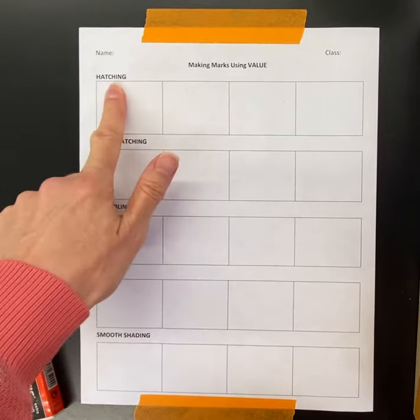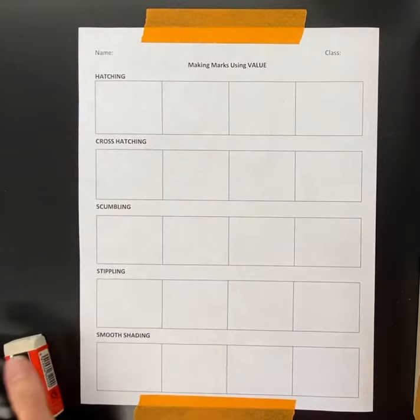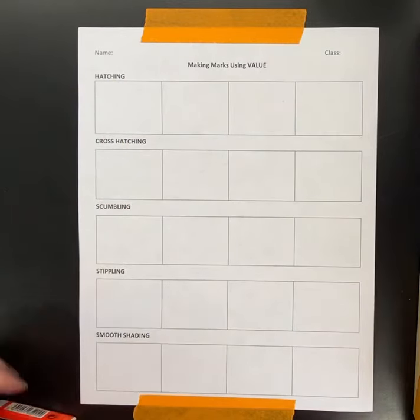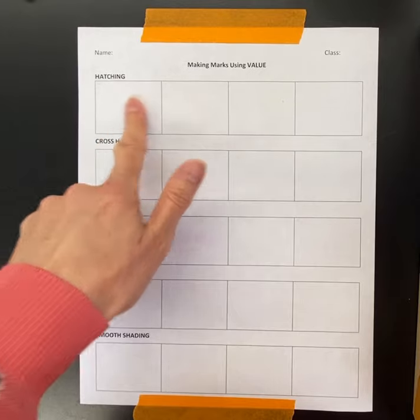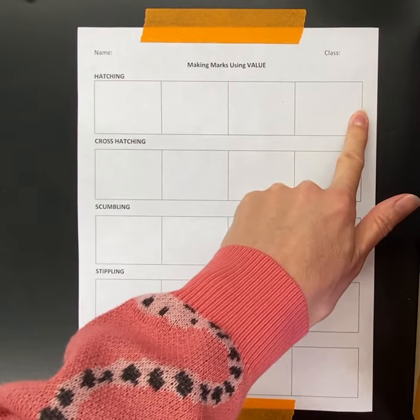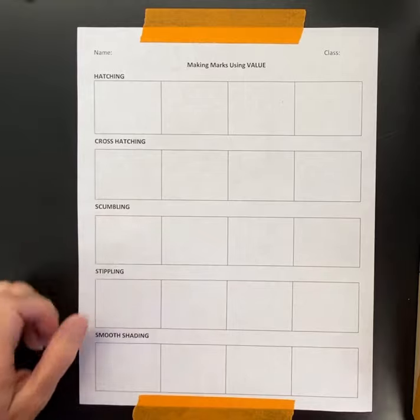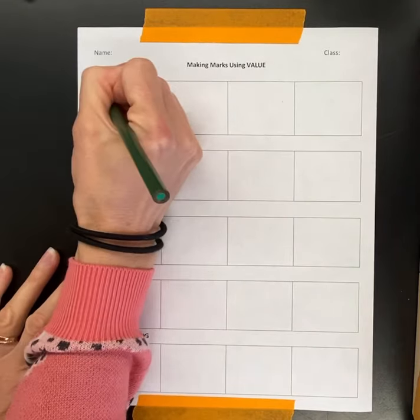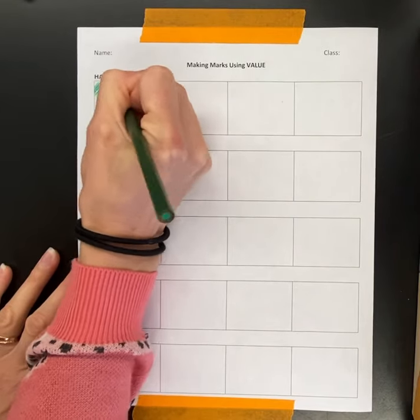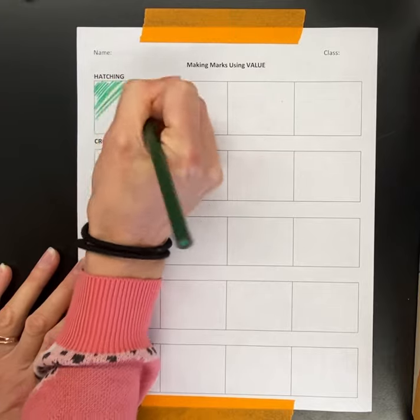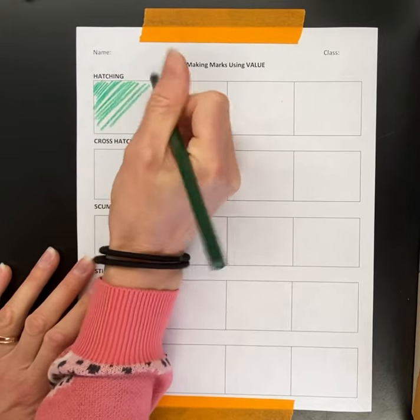For this video I'm going to specifically go over hatching and cross hatching. The goal is to go from dark to light. We're going to start with the darkest square here. Hatching is when lines go in one direction. In this case I'm going to make them go diagonal.